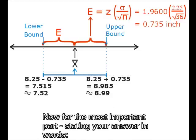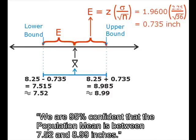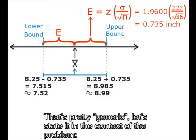Now for the most important part, stating your answer in words. We are 95% confident that the population mean is between 7.52 and 8.99 inches. That's pretty generic. Let's state it in the context of the problem.